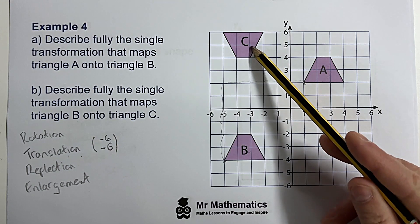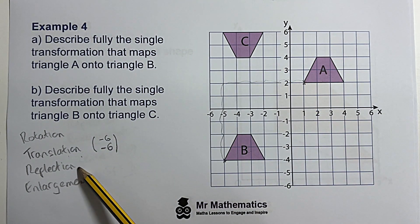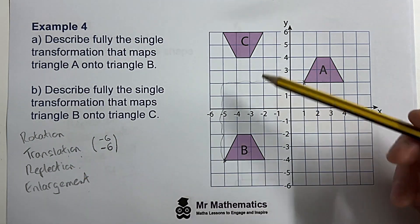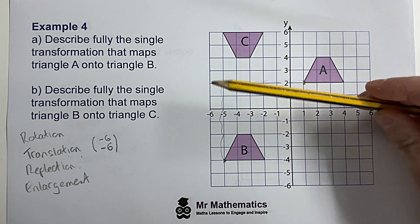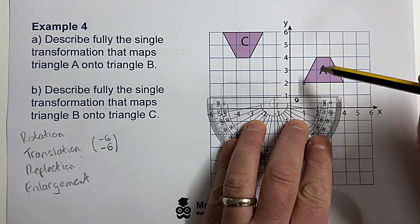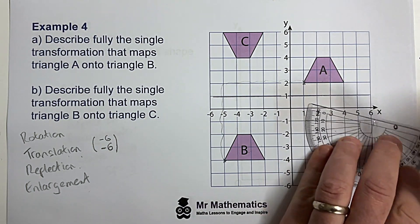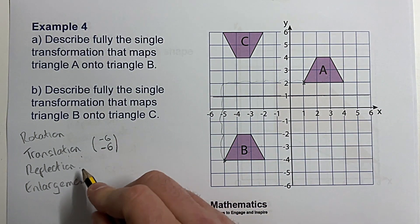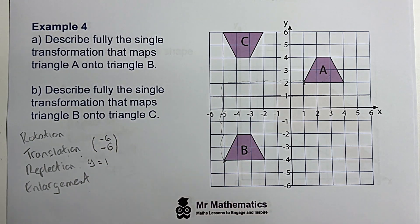From B to C, you can see that B has been flipped to C, so this will be a reflection. For a reflection we need to find the mirror line, which is halfway between the two shapes. The distance between them is six, so the mirror line is at the midpoint. Sketching that line, the value of y at any point along it is always one, so it's a reflection in the line y equals one.